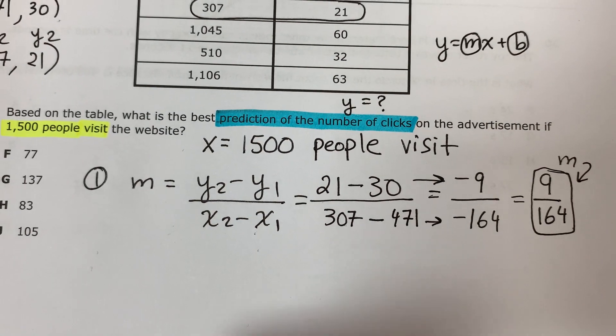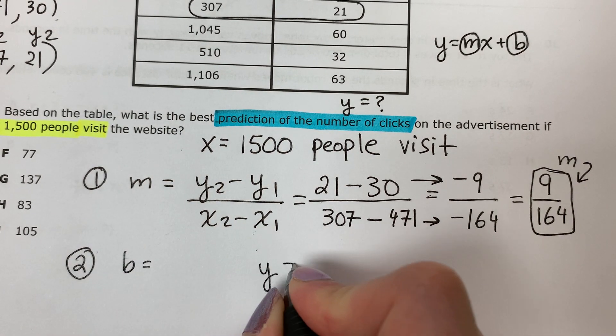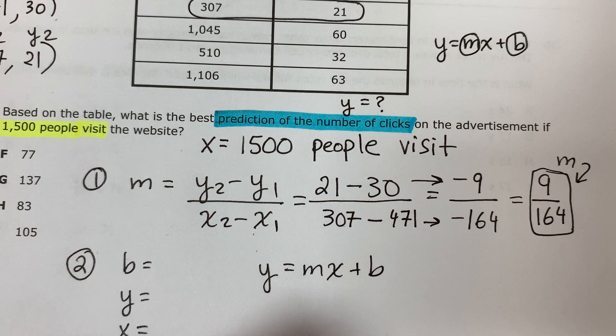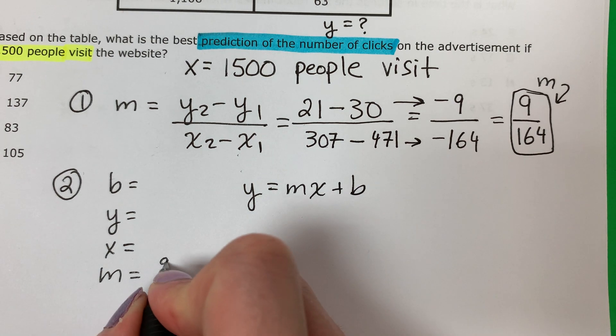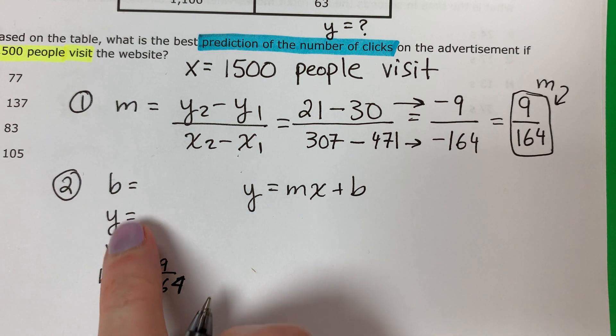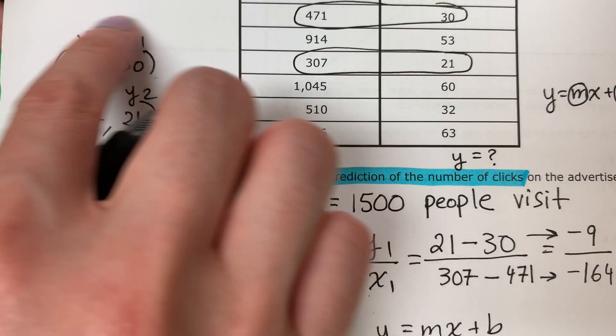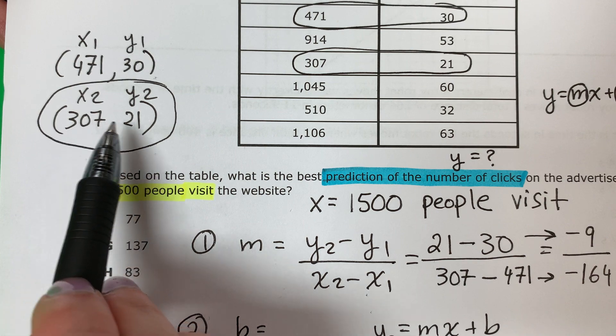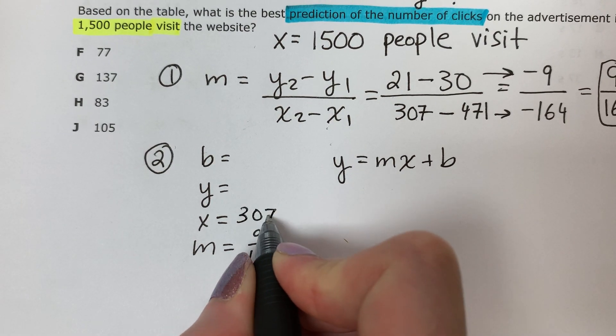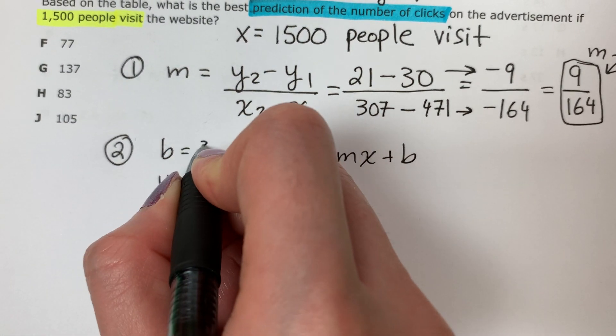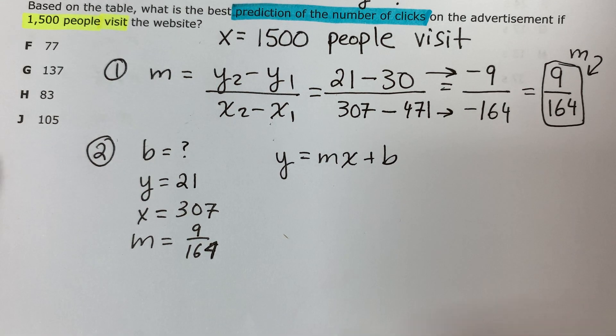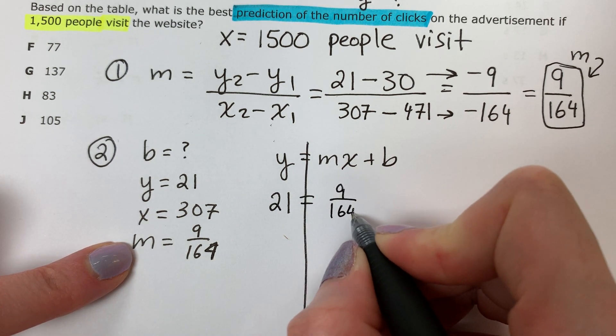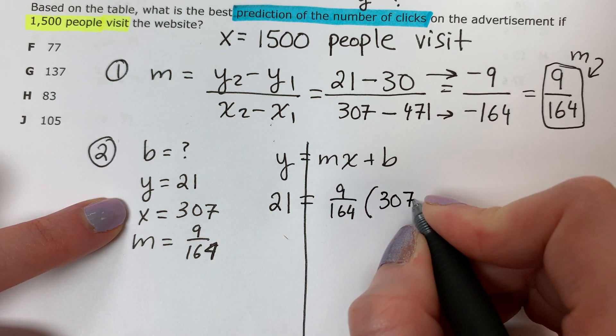Number two, I need B. The formula is Y equals MX plus B. So I need Y, X, and M. My M is 9 divided by 164. I need X and Y. Pick one pair. I'll go ahead and do this one. It doesn't matter which pair. X is 307, Y is 21. Y, 21 equals M, 9 divide 164, times parenthesis 307 parenthesis plus B.